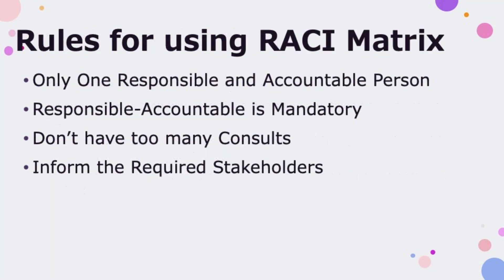Below are the common rules to construct the RACI matrix. Rule 1: Only one accountable party. If you have more than one party accountable for the same task, it would be like having multiple people driving a car — it will create confusion and malfunction.